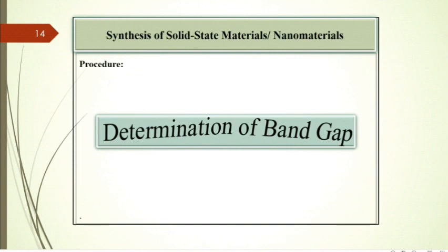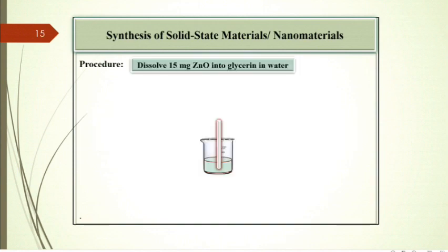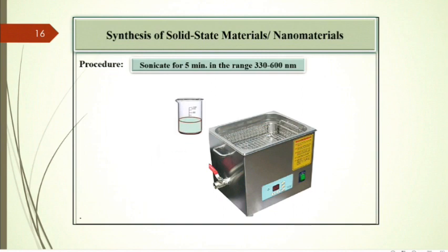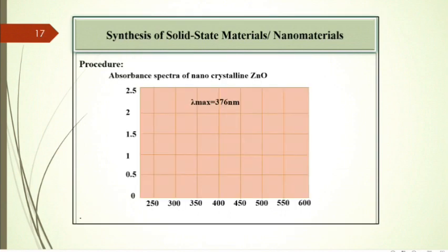Next step is determination of band gap. For that, dissolve 15 mg zinc oxide and transfer it into 10% glycerin in water. Sonicate this mixture for 5 minutes in the range 330 to 600 nm. Now record the absorption spectrum from maxima in the spectrum. Calculate the band gap of zinc oxide.